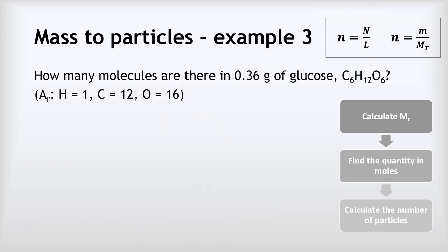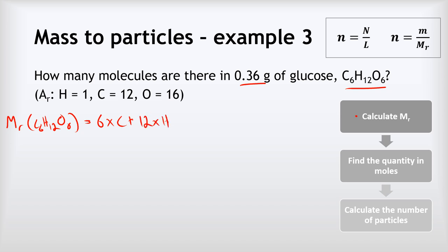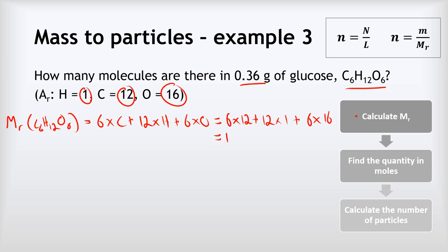Our last example of calculating a number of particles from a mass: how many molecules are there in 0.36 grams of glucose, C₆H₁₂O₆? Again, we start by calculating the relative formula mass. The MR of C₆H₁₂O₆ equals 6 times carbon plus 12 times hydrogen plus 6 times oxygen, which is 6 times 12 plus 12 times 1 plus 6 times 16, giving an MR for glucose of 180.